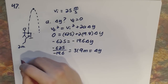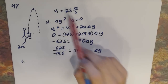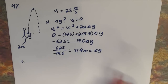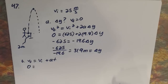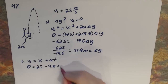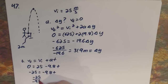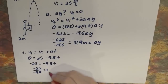Part B asks: how long does it take the ball to reach its highest point? Using v-final equals v-initial plus A·t: v-final is 0, v-initial is 25, acceleration is negative 9.8. We subtract 25 and divide by negative 9.8 to get time equals 2.55 seconds.